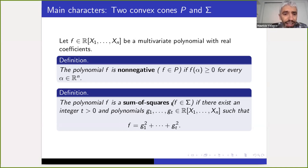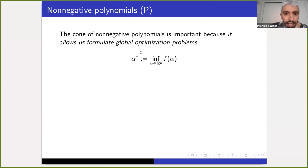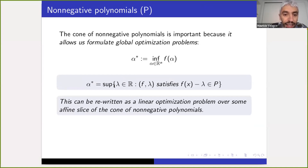These two objects are the main characters of the talk. The cone of non-negative polynomials is important because it allows us to formulate global optimization problems. Suppose you have a given polynomial f and you ask what's the smallest value it can take in all of R^n. This infimum alpha star can also be rewritten as the largest lower bound on f — the biggest real number lambda such that f minus lambda belongs to our cone P. This reformulation allows us to write global optimization problems as linear optimization problems over affine slices of the cone of non-negative polynomials.